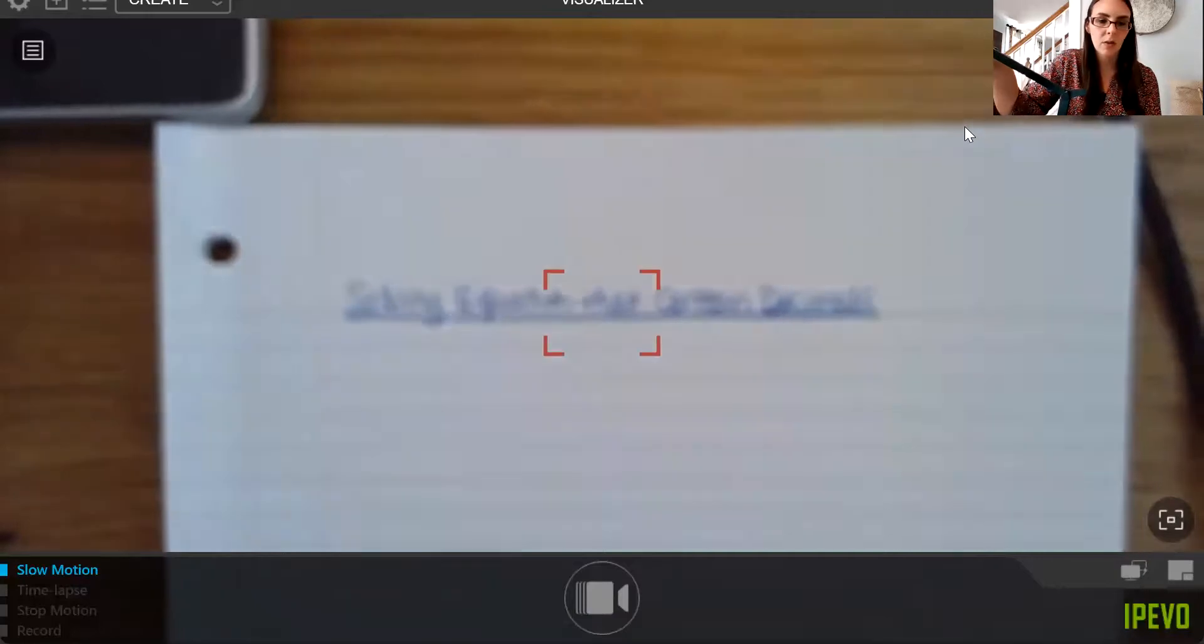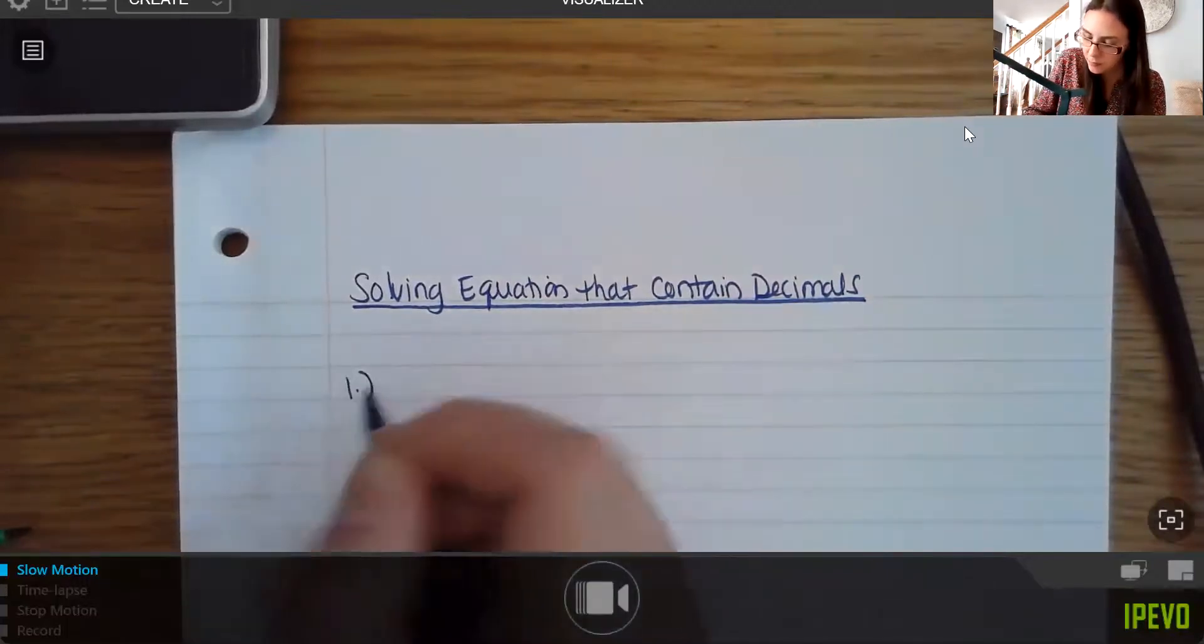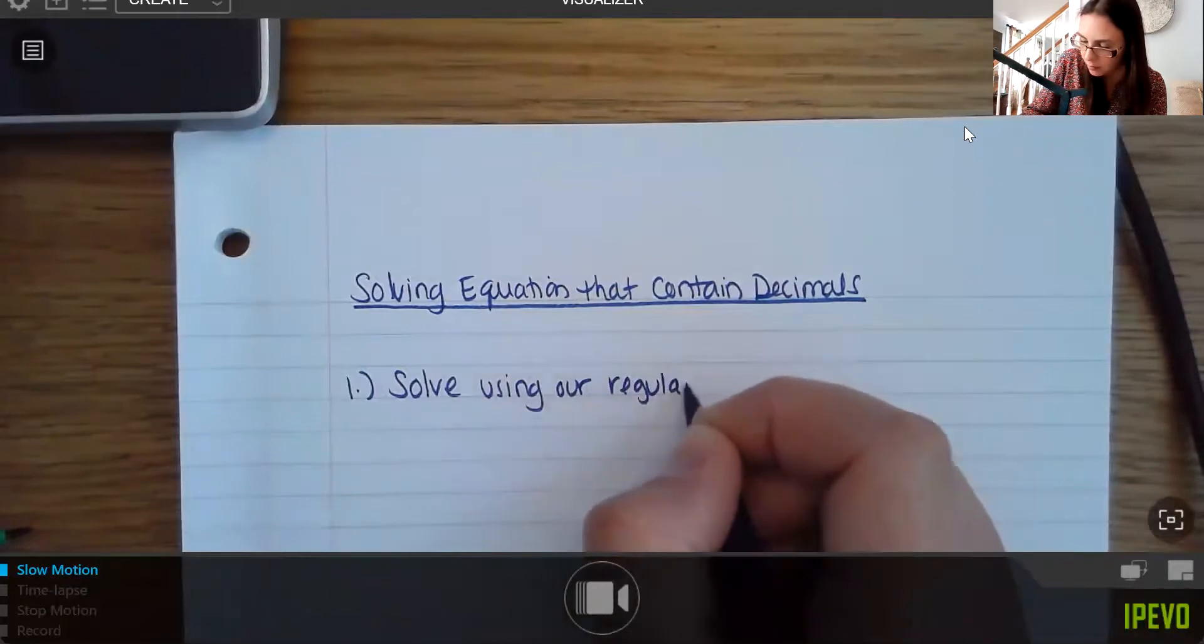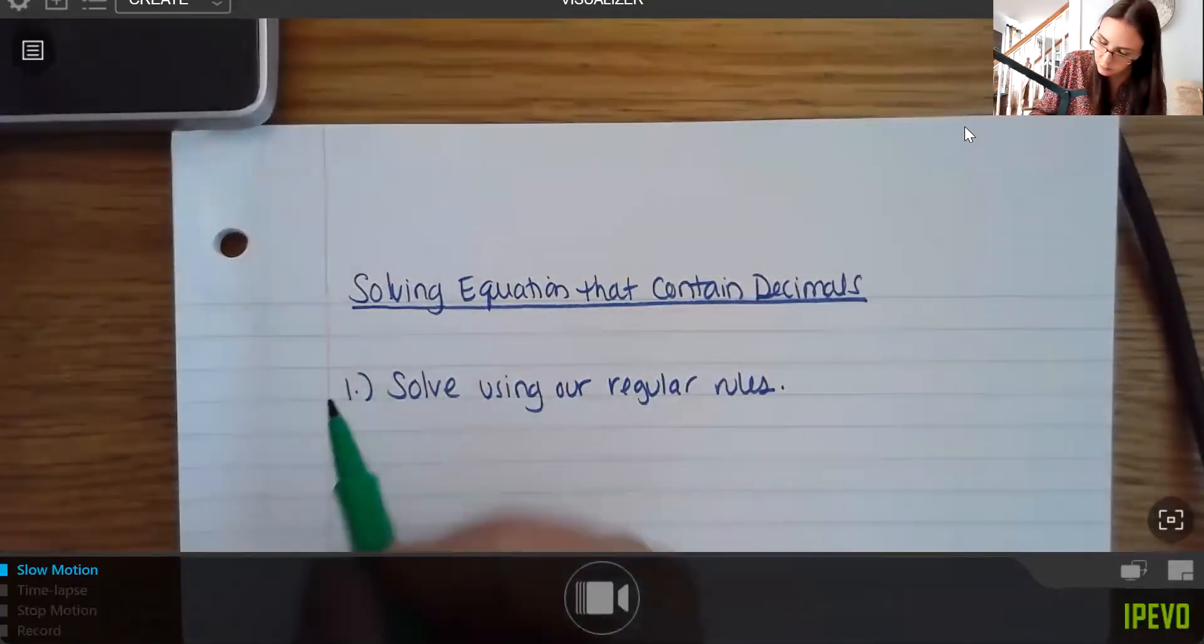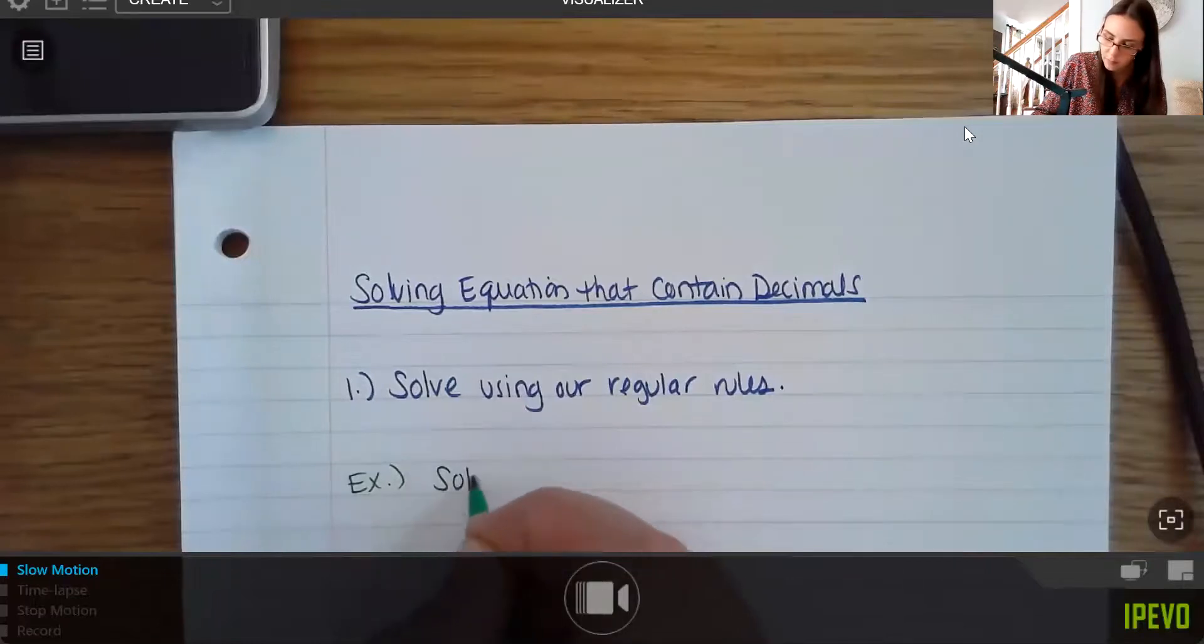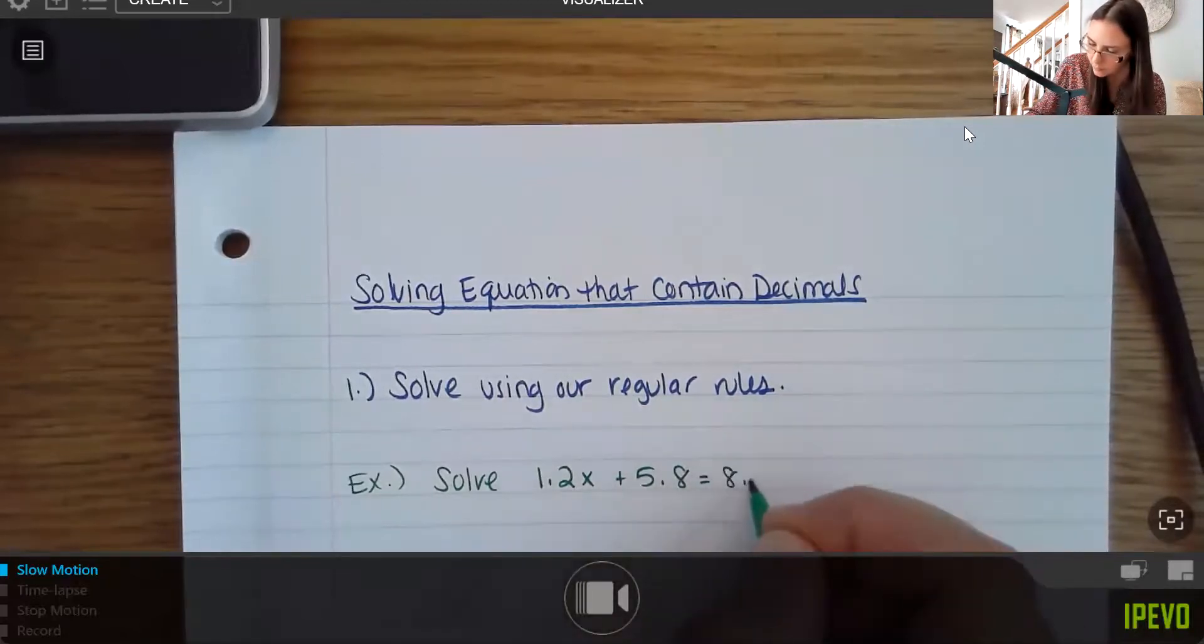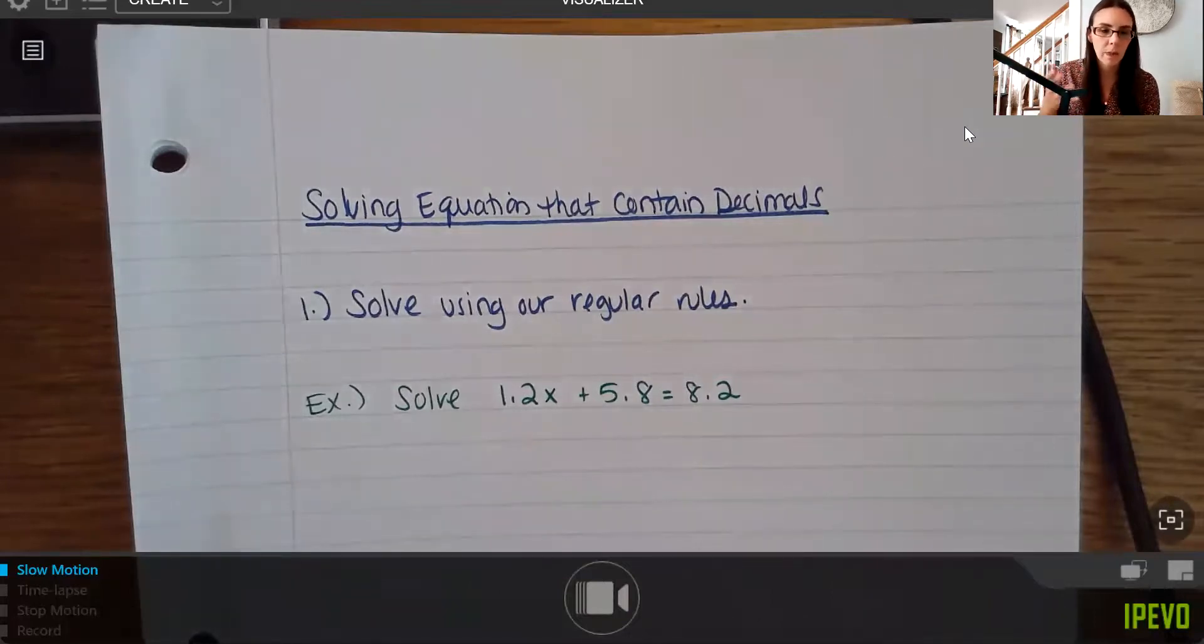Now, there are two strategies that you can use with solving decimals. And the first one is to just do nothing different. So strategy number one is to just solve using our regular rules, right? So no change or anything here. So for instance, let's do a couple of examples. So let's solve 1.2x plus 5.8 equals 8.2. And again, I know I'm not reading the numbers really correctly in their true form, but I think it just helps in a video to speak where the decimal point is.